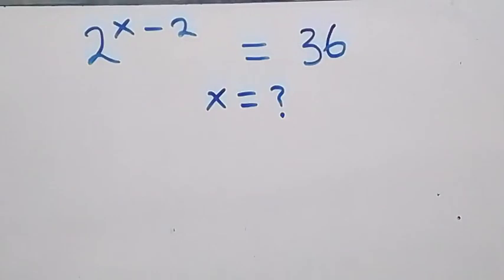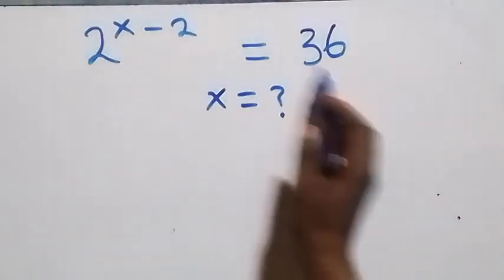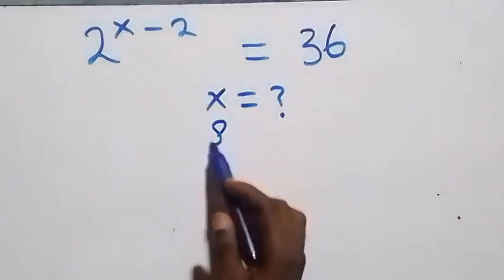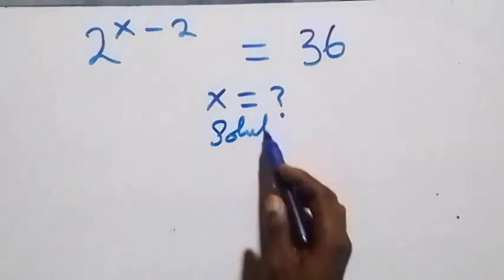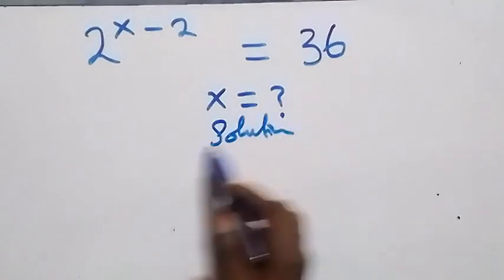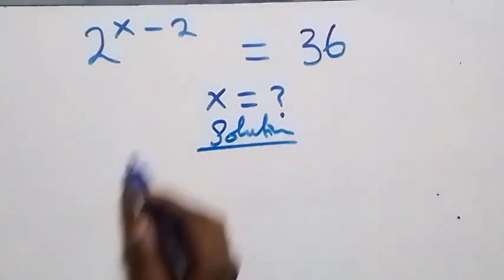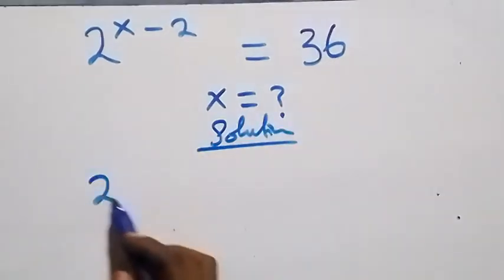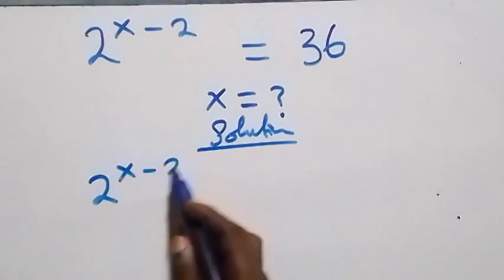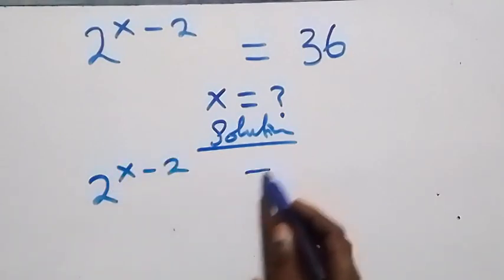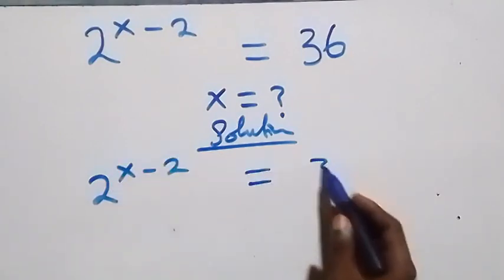Hello, you are welcome. How to solve this nice exponential equation. What we have here is 2 raised to power x minus 2 equals to 36.